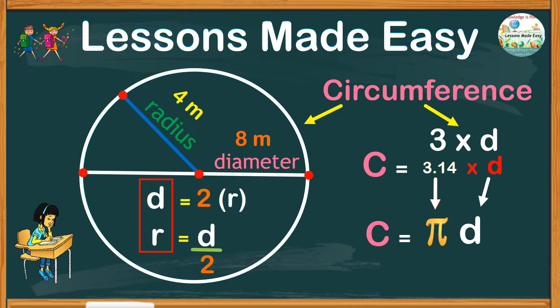In some cases, the given measurement is the radius. For this, we can use the formula 2 pi r.